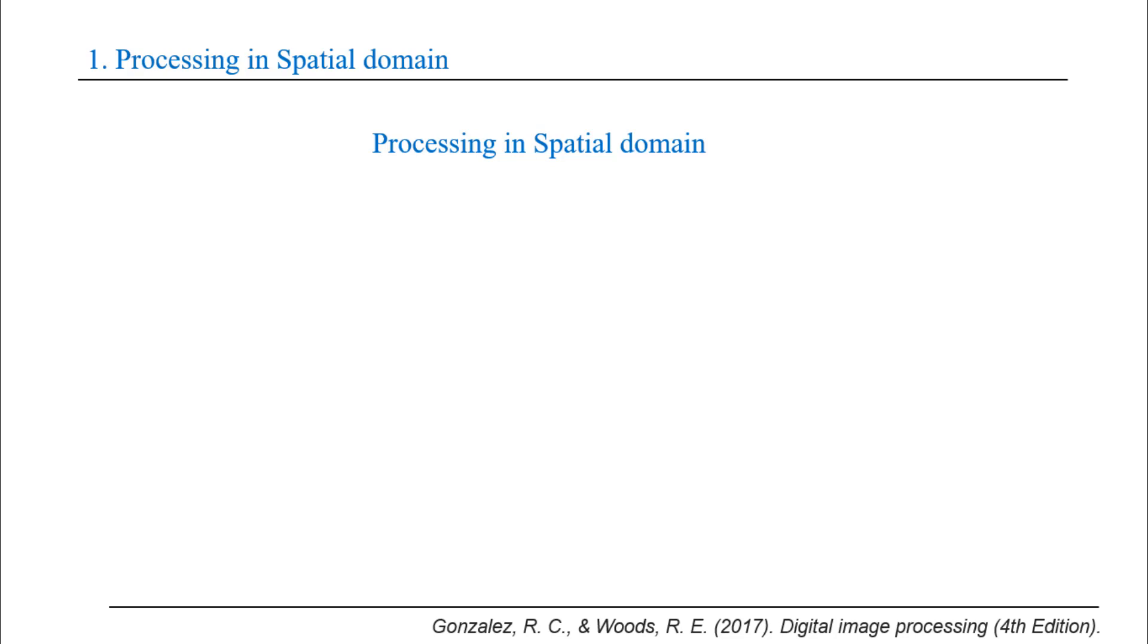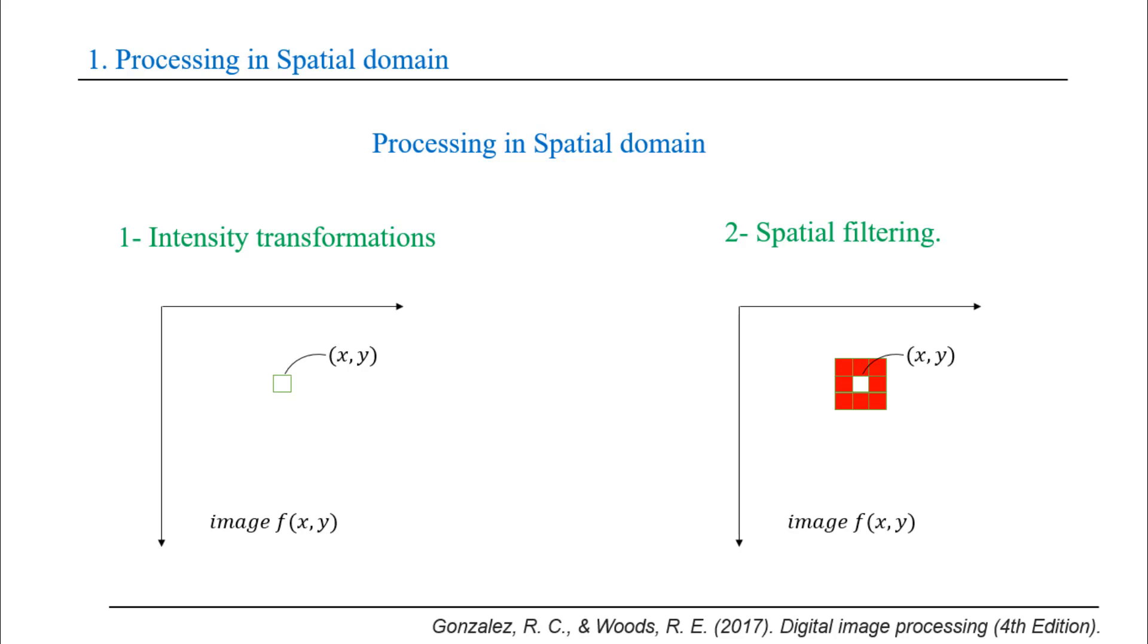We can divide spatial processing into two categories: intensity transformation and spatial filtering. We can define intensity transformation as operations on single pixels of an image, while spatial filtering performs operations on the neighborhood of the pixels in an image.